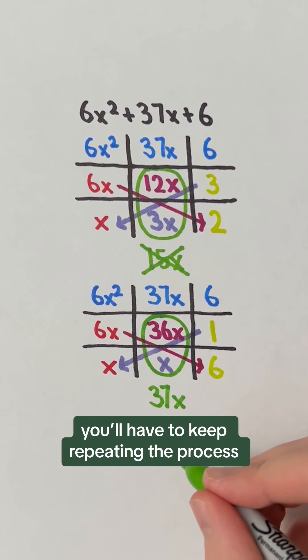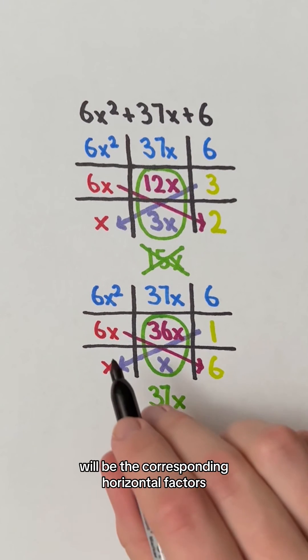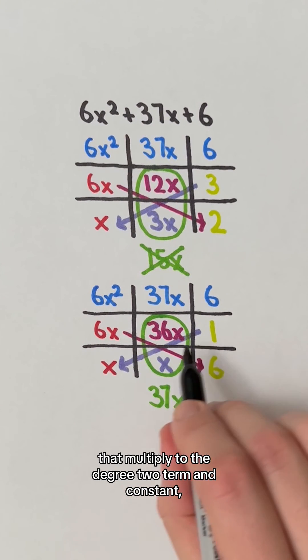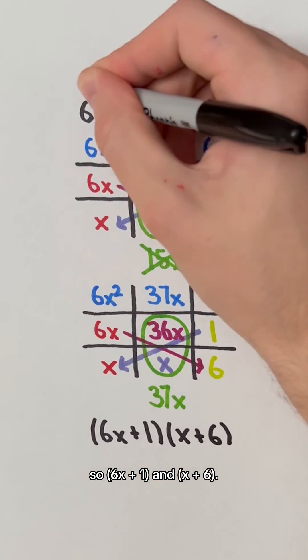If you didn't get the x term, you'll have to keep repeating the process until you do get the x term. The factors of the quadratic will be the corresponding horizontal factors that multiply to the degree 2 term and constant. So, 6x plus 1 and x plus 6.